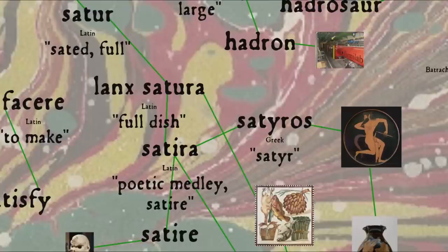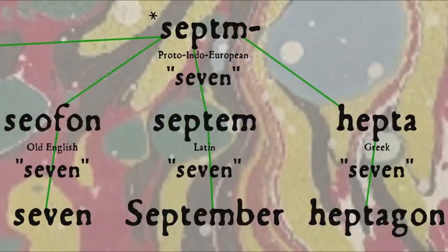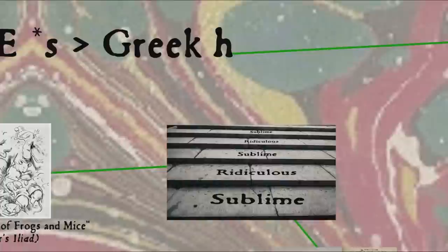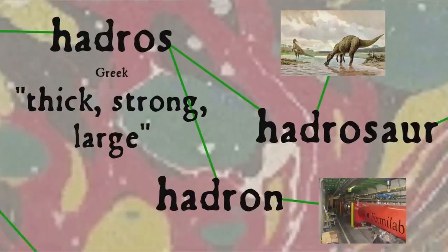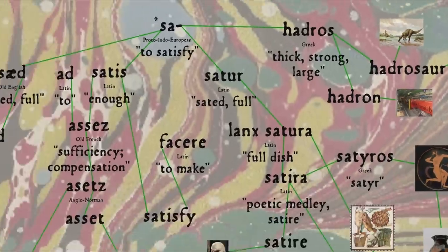If this whole etymology seems a little far-fetched to you, let me double down on it by pointing out that the root sa also came into Greek, but because of a sound change in which prevocalic s becomes h in Greek, as we can also see in Greek hepta meaning seven, as in heptagon, corresponding to Latin septem and English seven, the Greek derivative is hadros meaning thick, strong, or large, which comes into English in such words as hadrosaur, a species of dinosaur, and hadron of large hadron collider fame, productive little root that Proto-Indo-European sa.